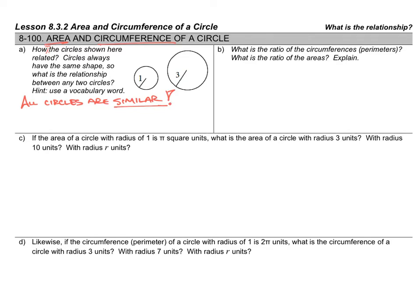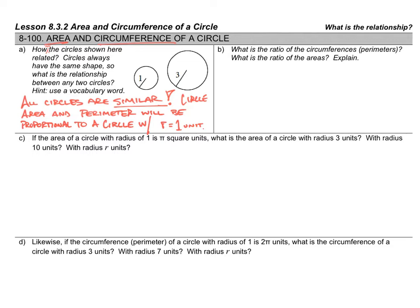Since all circles are similar, I can now say this. If all circles are similar, that means the area and perimeter of any circle will be proportional to a circle with a radius of one unit — often called the unit circle, because it has a radius of one unit. That's the circle we worked with in lesson 8.3.2. To go from a radius of one to a radius of three, we have a scale factor of three.